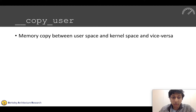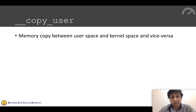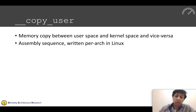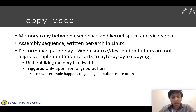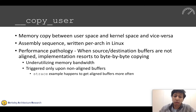The copy_user function is a memory copy between user space and kernel space in the Linux kernel — an assembly sequence written per-architecture. The RISC-V implementation has a performance pathology: when source and destination buffers aren't aligned, the implementation resorts to a byte-by-byte copy, making poor utilization of memory bandwidth, and this is non-deterministic. The strace example just happens to get aligned buffers more often, which we confirmed by instrumenting the kernel.